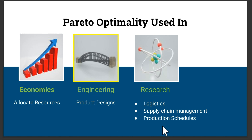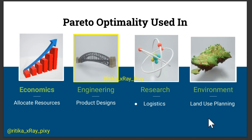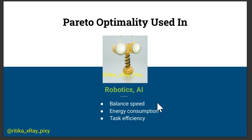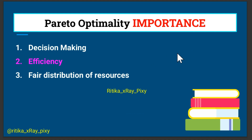In operations research, it is used to optimize logistics, supply chain management, and production schedules by balancing cost, time, and resource use. It also applies in environmental science such as land use planning, and in robotics and artificial intelligence, where it is used in decision-making algorithms where robots need to balance speed, energy consumption, and task efficiency.